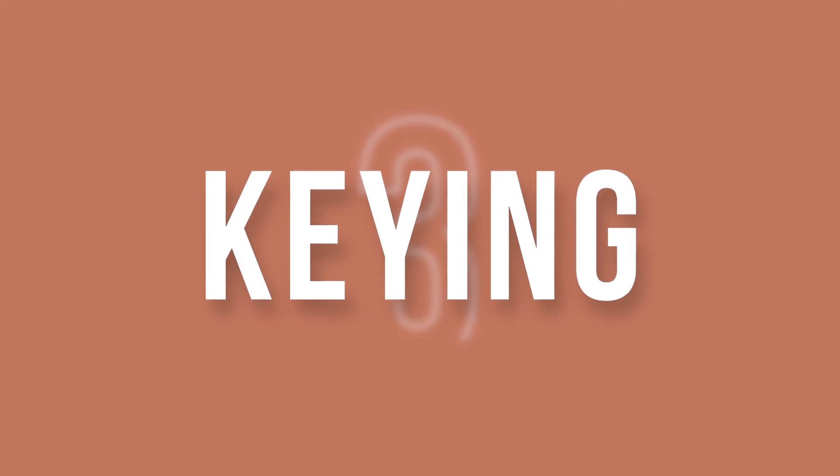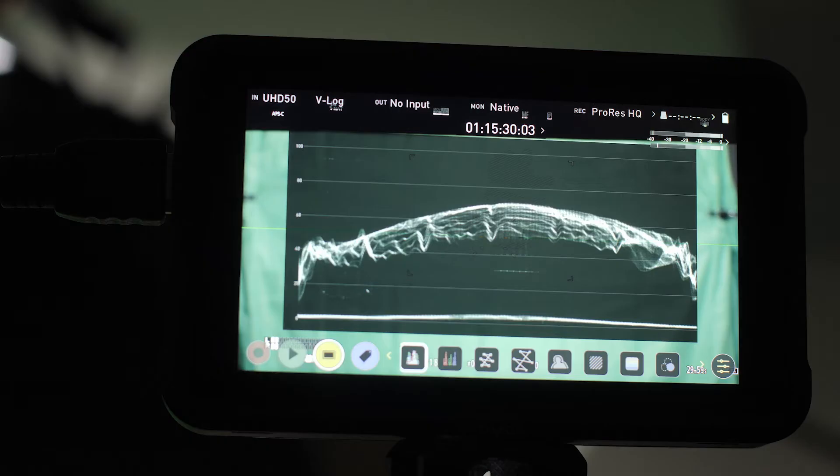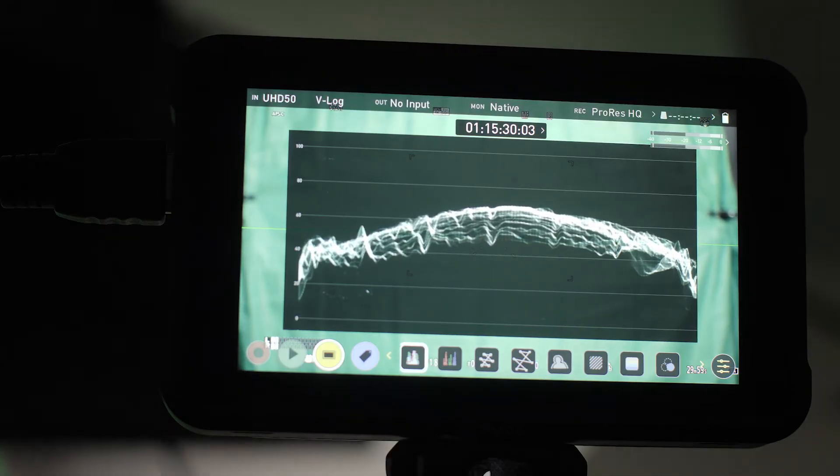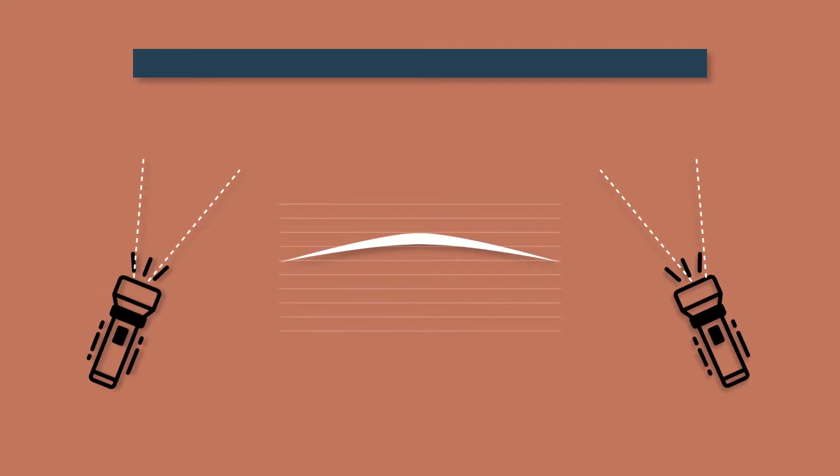If you're using green screen or you want to key out a color and you don't currently have any monitoring equipment with advanced video features such as false color, waveform is a great secondary option. What you want to look out for is a flat line going across your entire waveform. If it drops off in certain areas, add some light onto that background and it will gradually level that line out, making it a lot easier for you to key out your intended color.